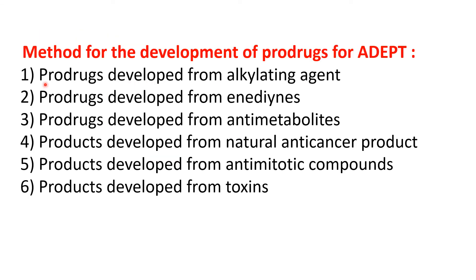There are some important methods useful for the development of prodrugs for ADEPT. The first is prodrugs developed from alkylating agents, then prodrugs developed from anilines, from anti-metabolites, natural anti-cancer products, anti-mitotic compounds, as well as prodrugs developed from toxins. These are the different methods useful for the development of prodrugs for ADEPT.